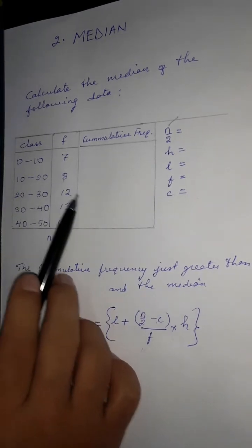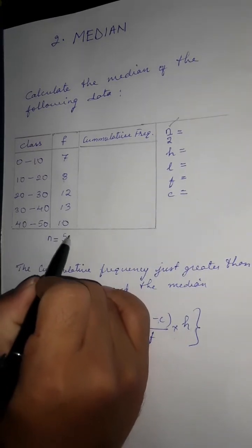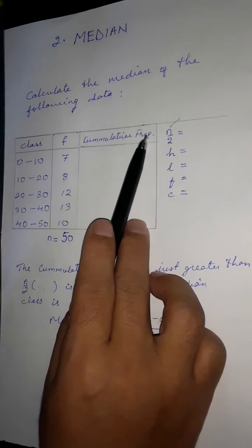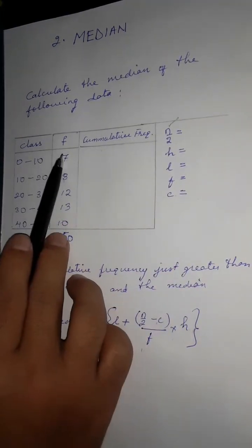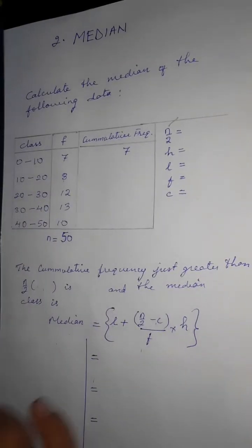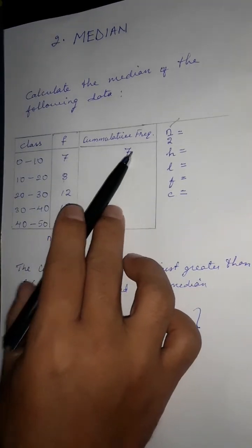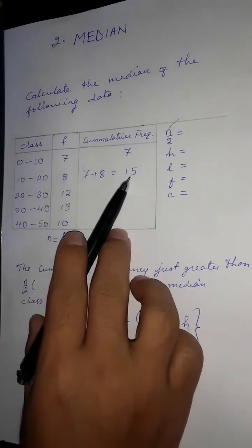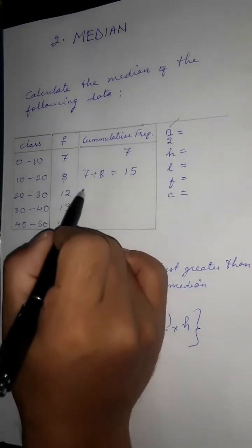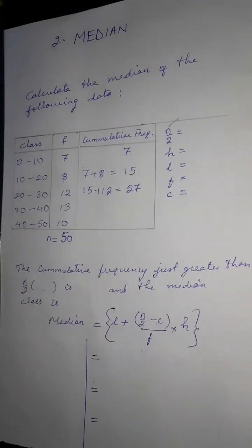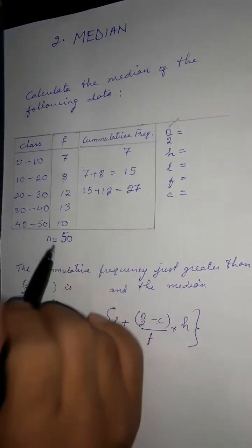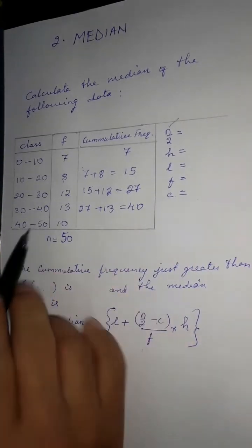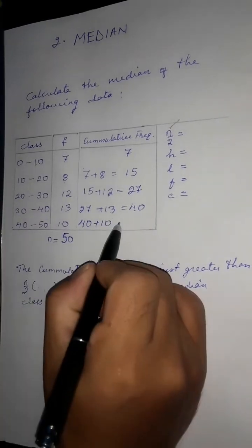The frequencies are 7 plus 8 = 15, 12, 13, 10. The cumulative frequencies are: 7 plus 8 = 15; 15 plus 12 = 27; 27 plus 13 = 40; 40 plus 10 = 50.